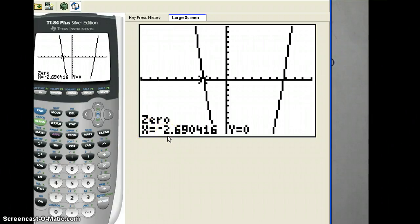And the solution over here is negative 2 point, and let's round that to 7. Negative 2.7.